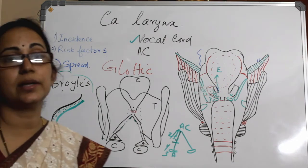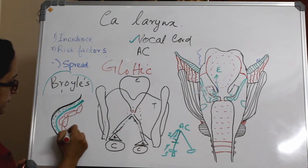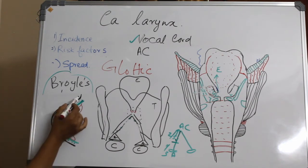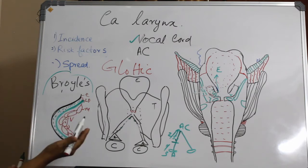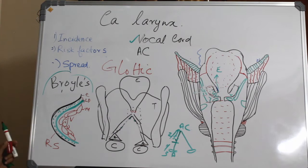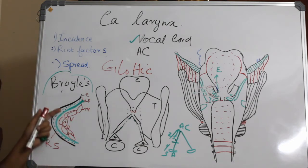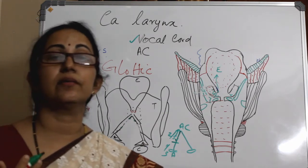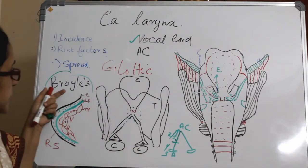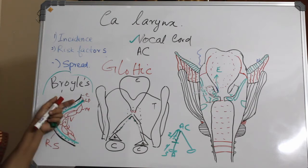The intermediate and deep layers together form the vocal ligament. Deep to that comes the muscular layer, which is the vocalis muscle. So: epithelium, then lamina propria — the superficial layer of lamina propria is called Reinke's space — then the muscle layer. In the early T1 stages, the vocal cord lesions are limited to Reinke's space and above. Once it has gone into the vocal ligament or muscle invasion, there will be fixity of the vocal cord. In initial T1 stages, it is limited to the mucosa only.